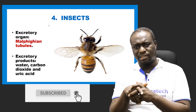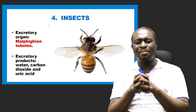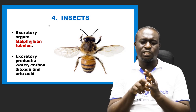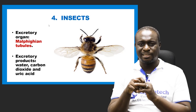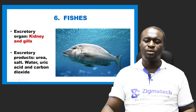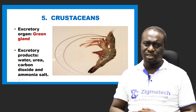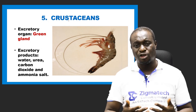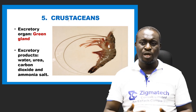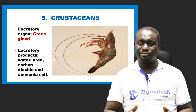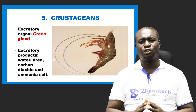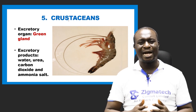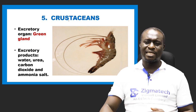Number four is insects. The excretory organ of all insects is called Malpighian tubules. Their excretory products include water, carbon dioxide, and uric acid. Number five is crustaceans, which also belong to the phylum Arthropoda, just like insects. Crustaceans include shrimp, prawns, and crabs. Their excretory organ is called the green gland. Their excretory products include water, urea, carbon dioxide, and ammonia salt or ammonium salt.